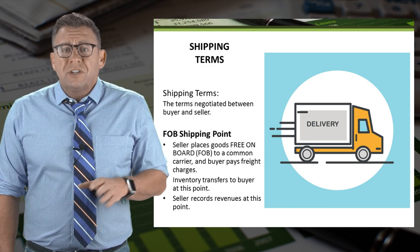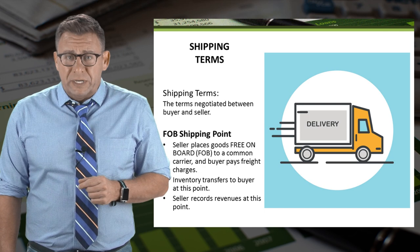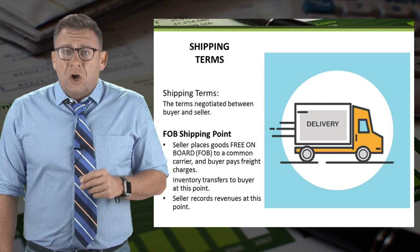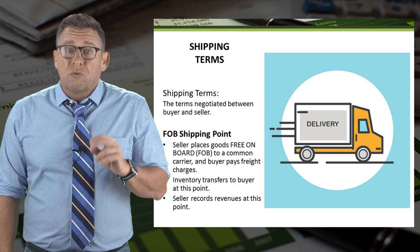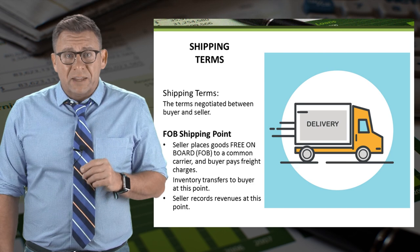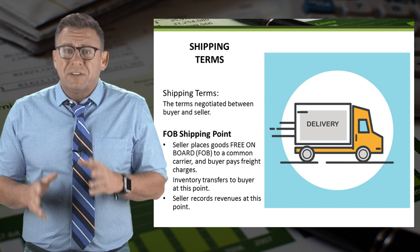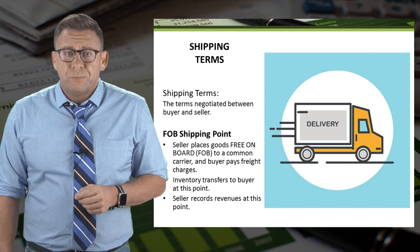When goods are shipped FOB shipping point, ownership changes hands and revenue is recognized at the point when the goods leave the seller's shipping dock.